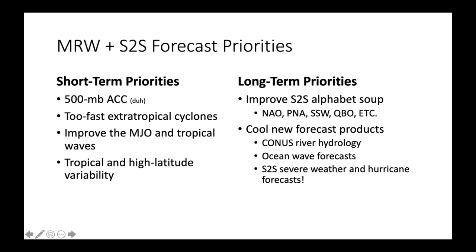And then also we have our long-term priorities. We want to improve the S2S predictions of the alphabet soup of climate modes. We're going to take advantage of the new functionality from UFS to start to produce a lot of new forecast products — we can look forward to producing new hydrological forecasts produced directly within the global models, as well as ocean and wave forecasts that should be coming up soon in the GFS Ensemble version 12. Something I'm really excited about is there's some indication that we can get skillful S2S predictions of severe weather outbreaks and of intense hurricanes — some exciting things coming down the pipeline within the next couple of upgrades.